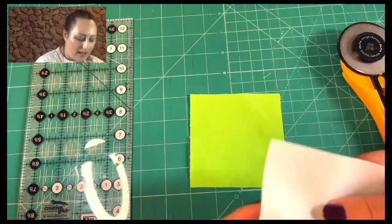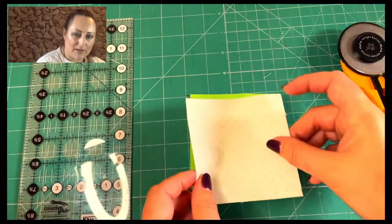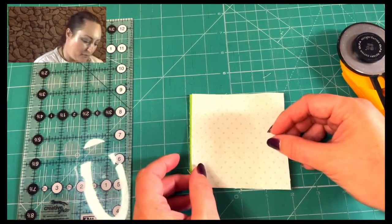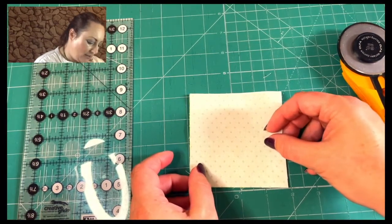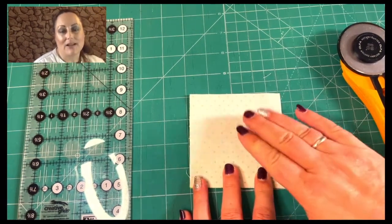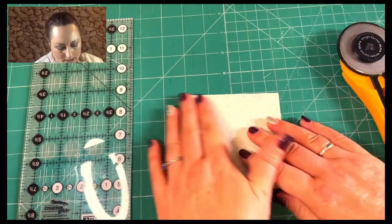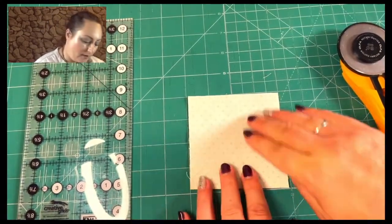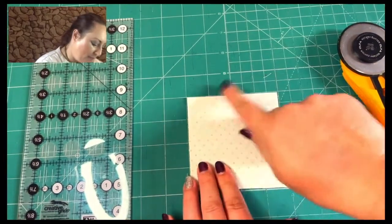We're going to start by putting our lighter of the two fabrics face down. So we want right sides together on our two fabrics and place one square on top of the other. It just makes your life a bit easier if the lighter one is on top. You'll see why in a moment. You want to make sure that your edges all line up nicely. There's no pokey out bits anywhere.